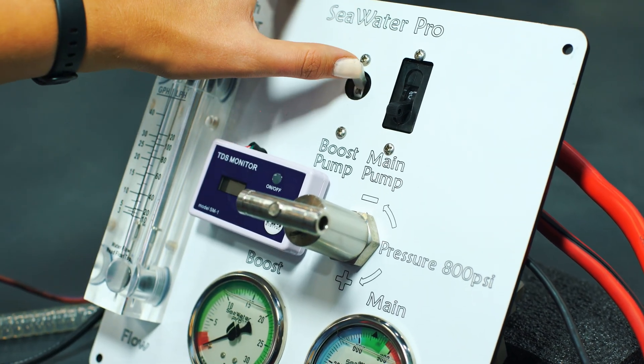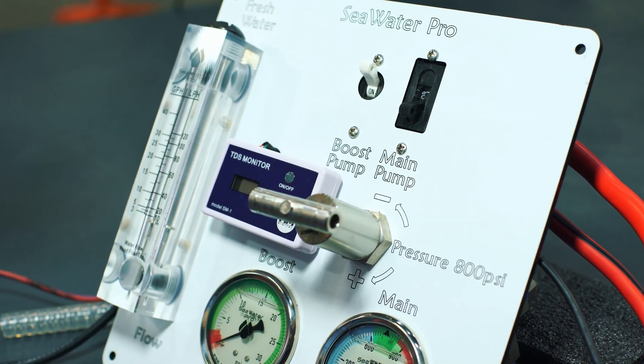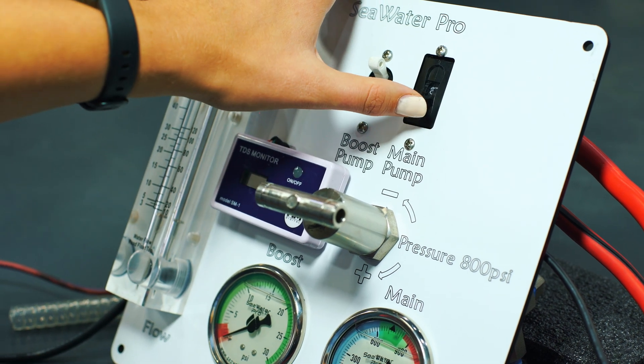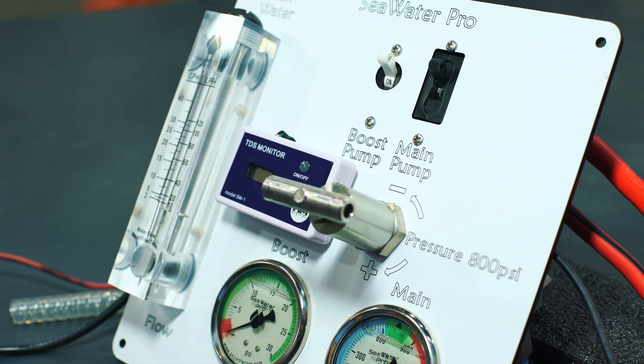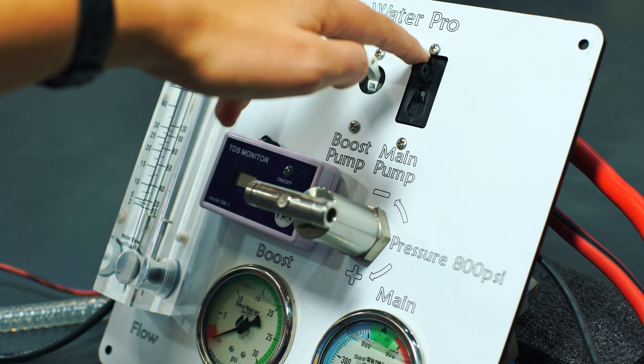To turn on your water maker, start priming the system by switching on the boost pump breaker first, followed by the main pump shortly after. That concludes our DC motor panel setup.